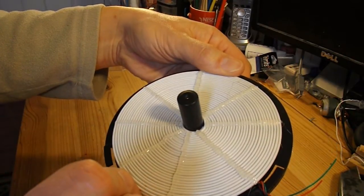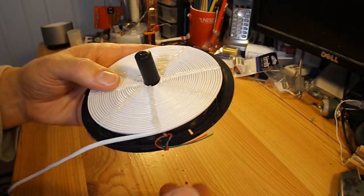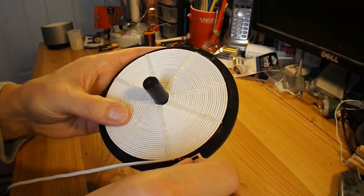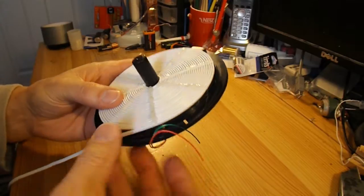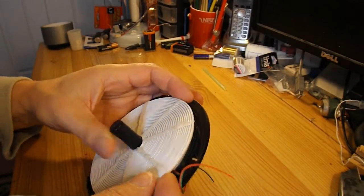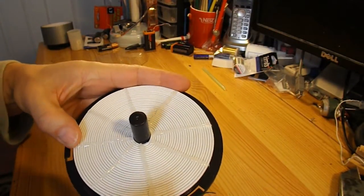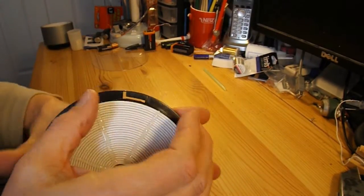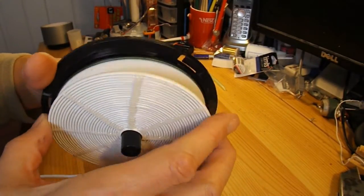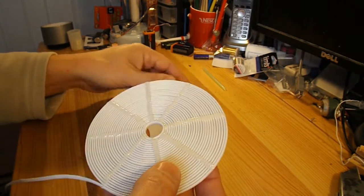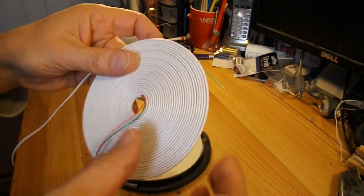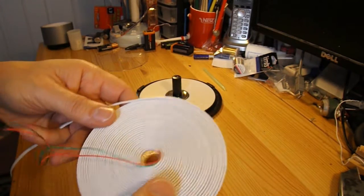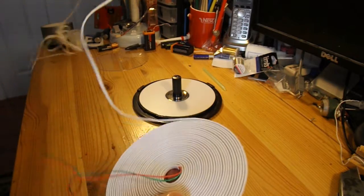And when that's cooled down I'll turn it over and put some on the other side. If nothing else it looks pretty. Let's see if we can get it off the spool. There we go. I'll put hot glue on this side as well and that should help to hold it all together.